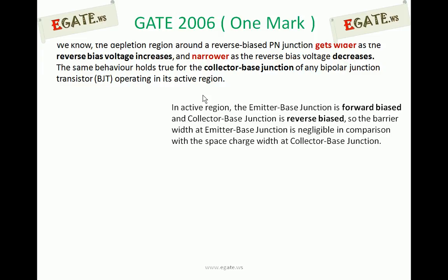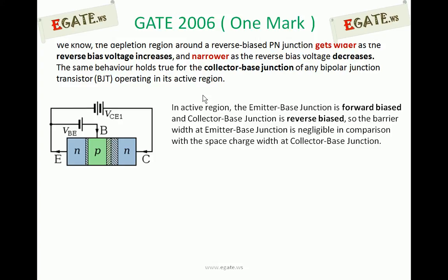The barrier width at the emitter-base junction is negligible compared to the collector-base junction, because the collector-base junction is reverse biased and the emitter-base junction is forward biased. In this NPN transistor diagram, under forward bias the depletion region is very small, and under reverse bias at the collector-base junction, the depletion region is very large compared to the forward bias potential barrier.